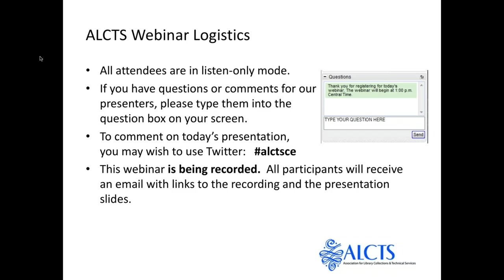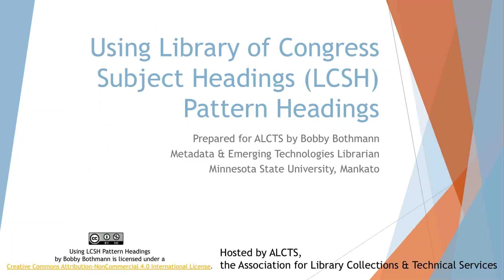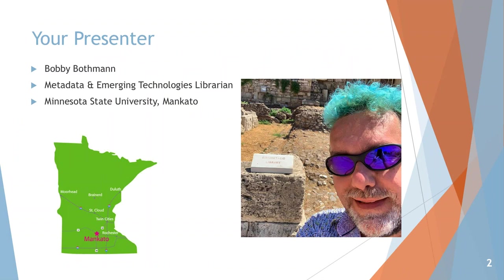Welcome, everybody. Good afternoon. My name is Bobbi Bothman, and I am at Minnesota State University, Mankato. Here's a map so that you know where Mankato actually is in the great state of Minnesota. Many of you who watched Little House on the Prairie would remember that Mankato was the big, bad city. That's a picture of me in front of Hadrian's Library in Athens, Greece — I was just there for the IFLA conference — the ruins of this really great reading room in this ancient library.